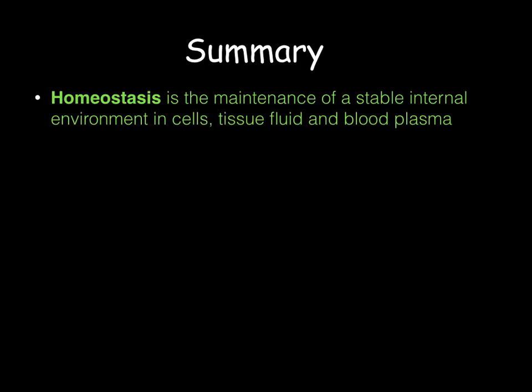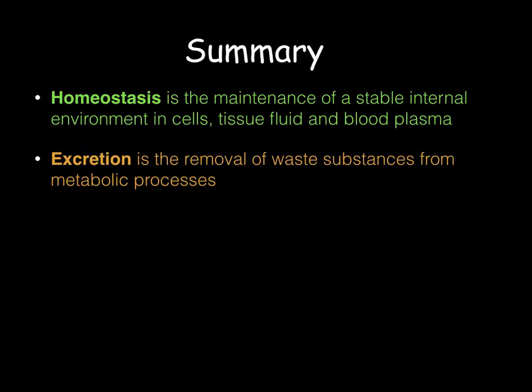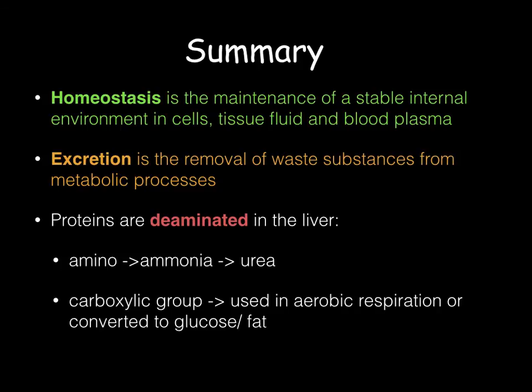To summarise: homeostasis is the maintenance of a stable internal environment in cells, the tissue fluid surrounding the cells, and the blood plasma from which the tissue fluid is derived. Excretion is the removal of waste substances from metabolic processes. Proteins are broken down into amino acids and deaminated in the liver — the amino group forms ammonia, which combines with carbon dioxide using ATP to form urea, excreted by the kidneys. The remaining keto acid is used in aerobic respiration or converted to glucose and fat.